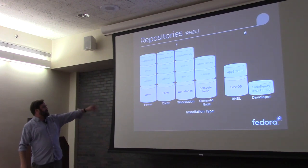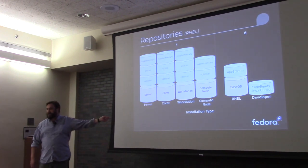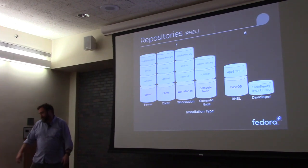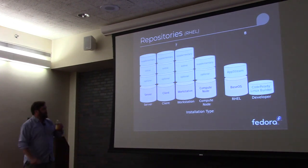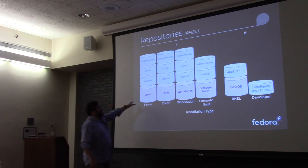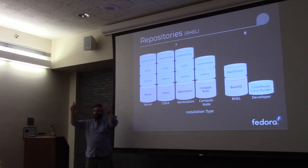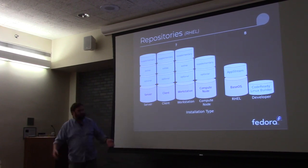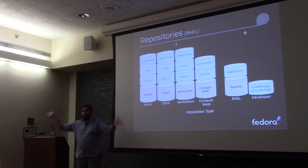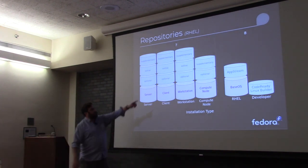This is the RHEL 7 repository infrastructure — just memorize that. I think this is why there's such slow adoption of new RHEL versions, because it takes so long to memorize all the different repositories. One of the things we were trying to do with RHEL 8 was make it simpler. We crashed all of this into just two: Base OS, which is everything to get your operating system up and running, and AppStream, which is all the extra applications you want on top.